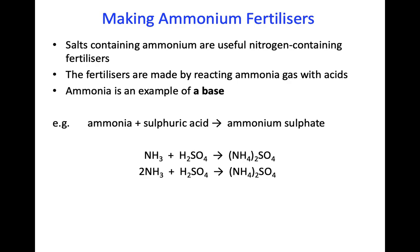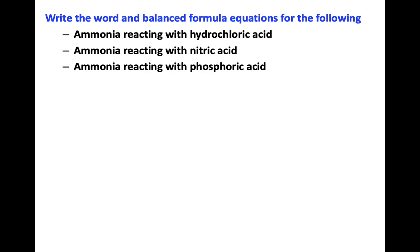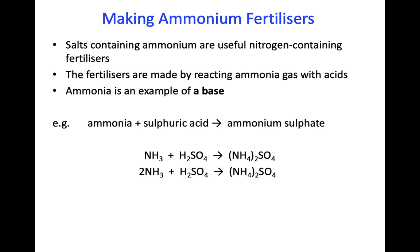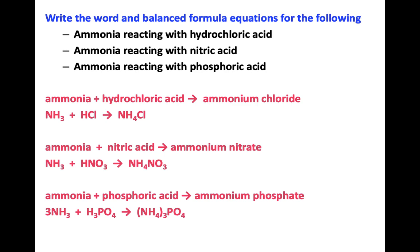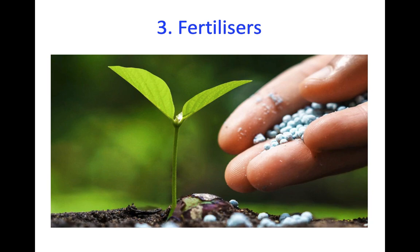We can take our nitric acid to make ammonium fertilisers. Salts containing ammonium are useful in nitrogen-containing fertilisers and they are made by reacting ammonia gas with acids. Ammonia is an example of a base, so when it reacts with acid we produce ammonium sulphate. This ammonium sulphate, as it's soluble, can then be added to crops to help them grow. In the same way, we can react ammonia with hydrochloric acid, nitric acid, and phosphoric acid. If we were to use ammonium phosphate as our fertiliser, we would not only be adding one of our three essential elements to the soil — we'd be adding two, because ammonium phosphate also contains phosphorus.